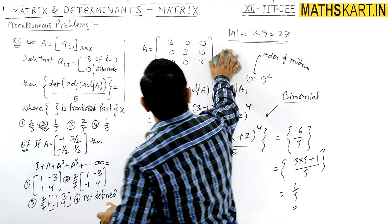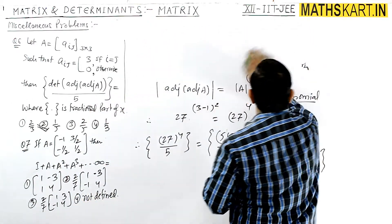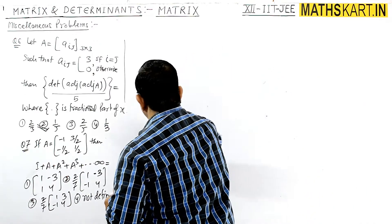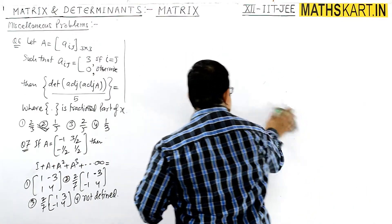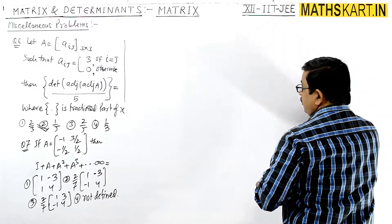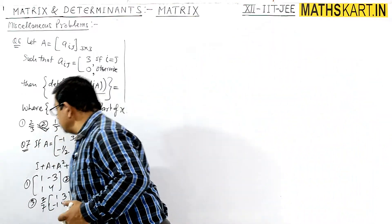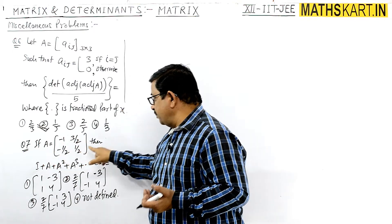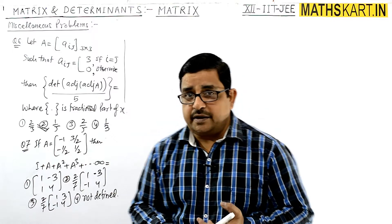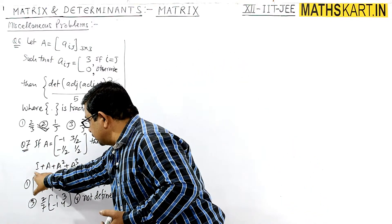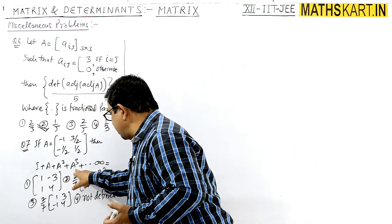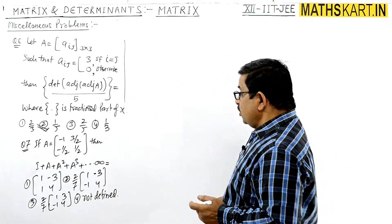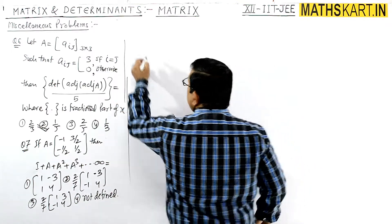Now we come to question number 7. Here, matrix A is given as [−1, 3/2 / −1/2, 1/2]. We have to find the value of I + A + A² + A³ + ... up to infinite terms. This also uses a binomial or series approach.